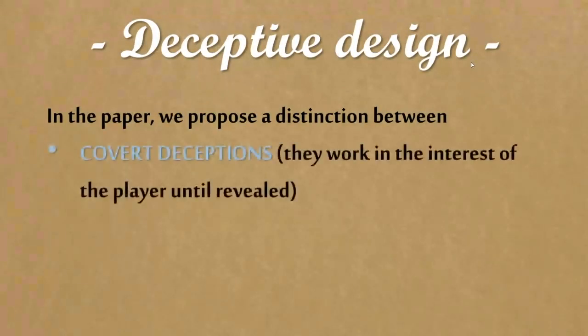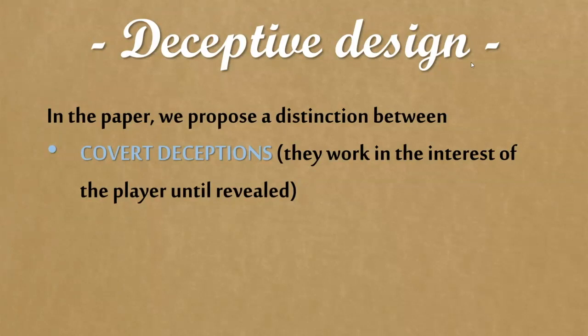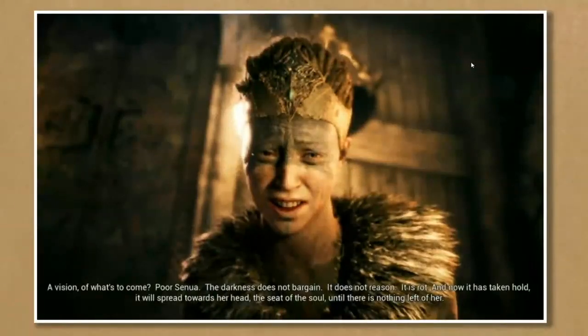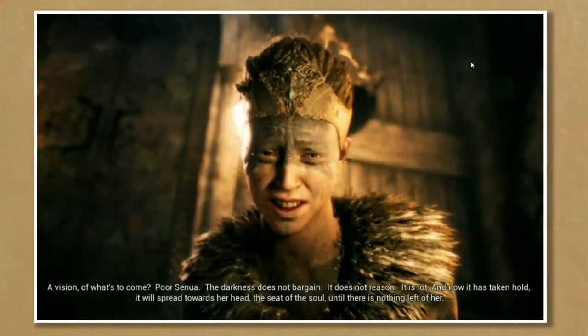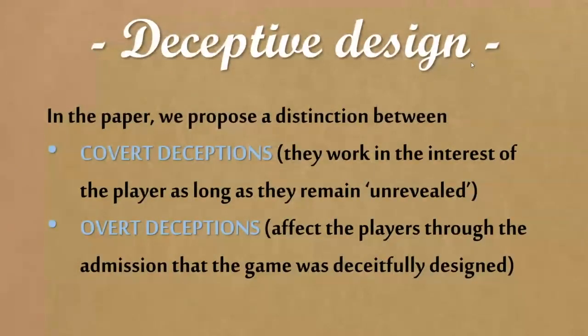In this paper we propose a distinction between covert and overt deceptions. Covert deceptions have an experiential effect as long as you don't know — they work as long as you are unaware that the game is cheating you. The permadeath example: you feel attachment and danger as long as you believe the permadeath condition exists. If you knew you could die as many times as you want, the gravitas and danger would be taken away. This is a hidden deception — it works as long as it remains hidden.